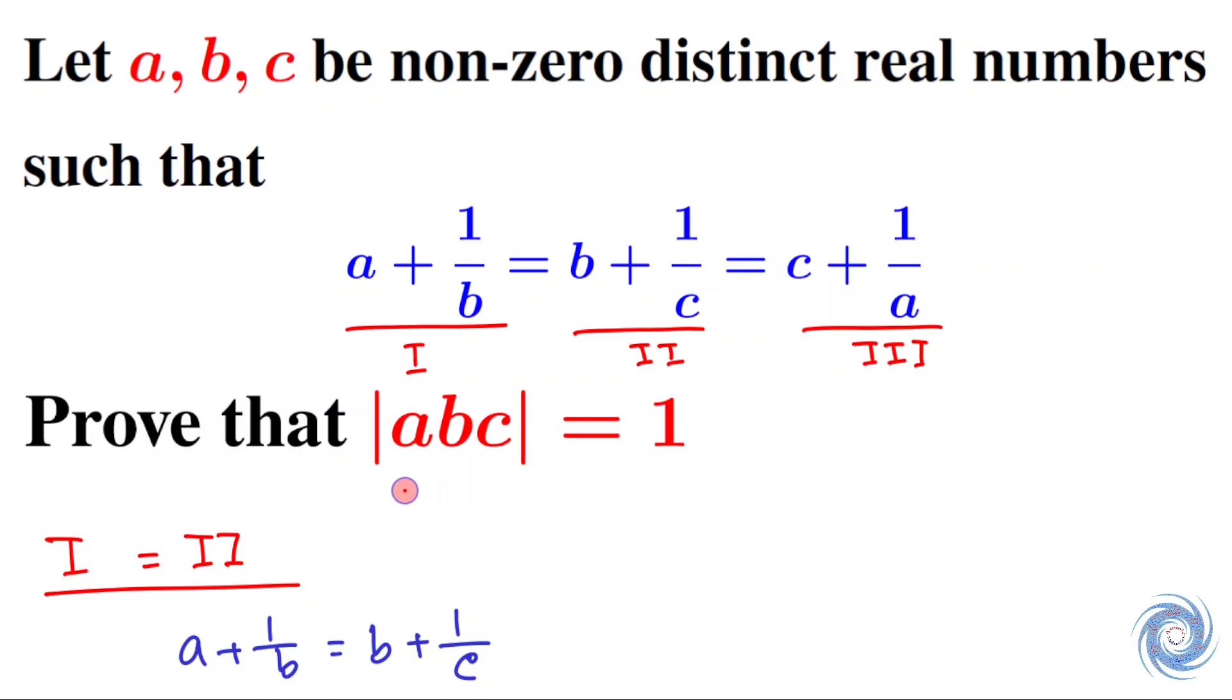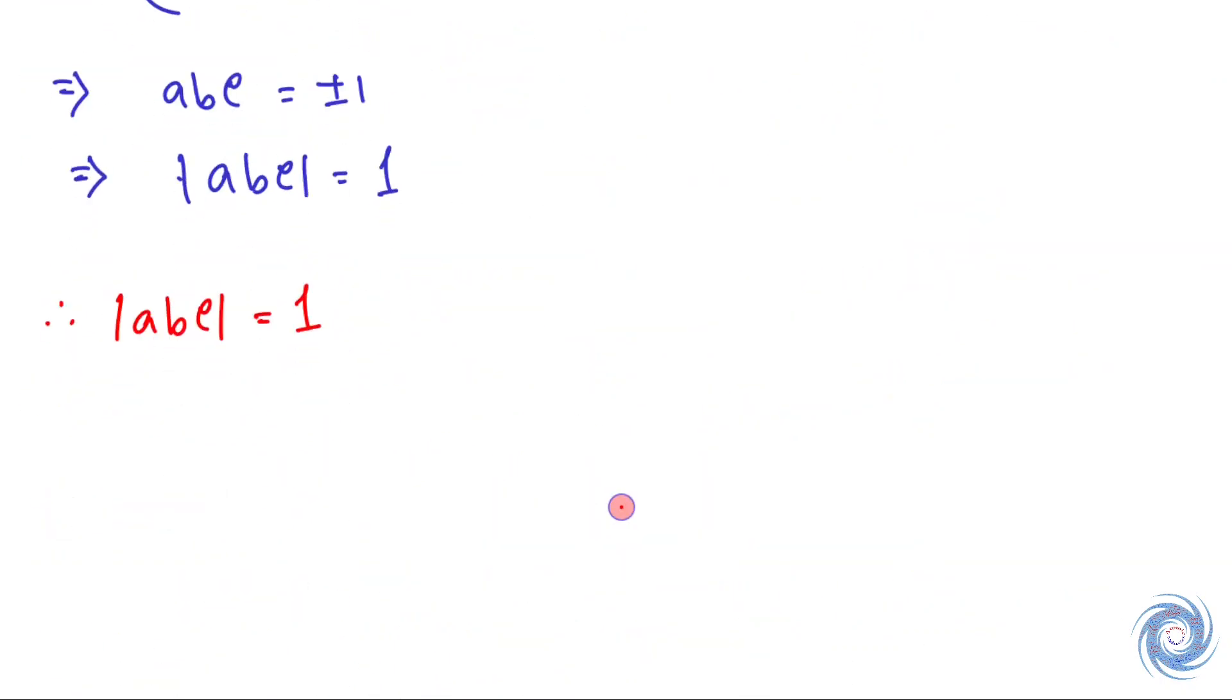Here we are supposed to prove that |abc| = 1, and here we have obtained |abc| = 1. So we are done.